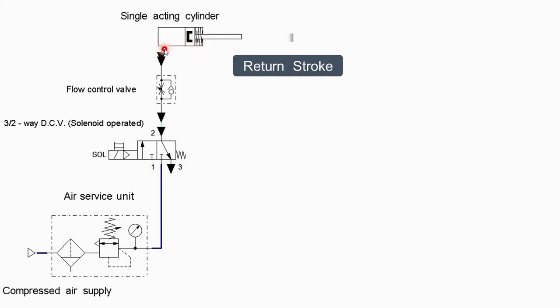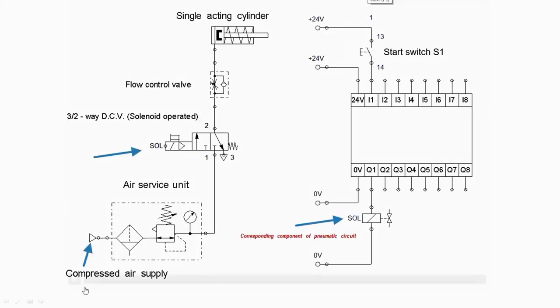And the air from this side, now it can freely, this is the free flow position of the check valve or non-return valve. So it can easily go from this side and it will enter from port 2, port 3, it will be exhausted to the atmosphere. So let us see this with the help of animation.